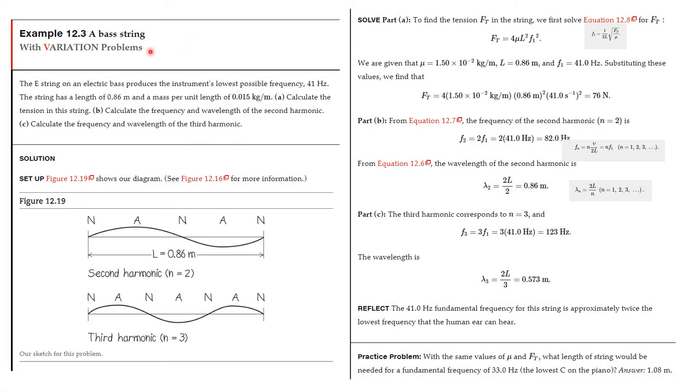Here's another problem dealing with a bass string. The E string on an electric bass, a bass guitar, produces the instrument's lowest possible frequency, 41 hertz. The string has a length of 0.86 meters and a mass per unit length of 0.015 kilograms per meter. Calculate the tension in the string, the frequency and wavelength of the second harmonic, and the frequency and wavelength of the third harmonic.